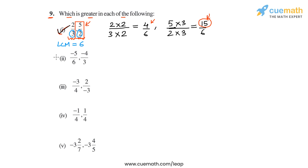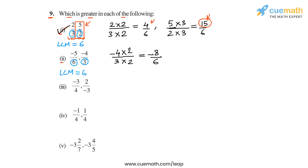Now let's come to part 2, in which we have to compare -5/6 and -4/3. The denominators are 6 and 3 and the LCM is 6. So we don't need to rewrite -5/6, but let's rewrite -4/3 as an equivalent rational number with denominator 6. So -4/3 will be (-4×2)/(3×2), or -8/6. Now comparing -5/6 and -8/6, we see that the numerator in -5/6 is greater, and therefore -5/6 will be greater than -8/6, or -4/3. So -5/6 is the greater number in part 2.